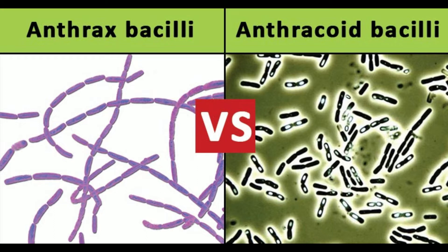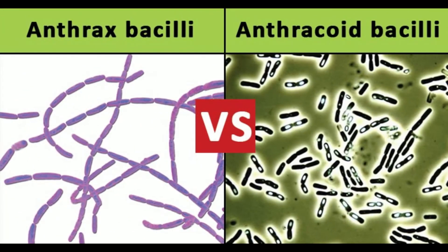Character 5: Motility - non-motile (anthrax) vs. motile (anthrachoid). Character 6: Under lower-power microscope - medusa head colony seen (anthrax) vs. not seen (anthrachoid). Character 7: Oxygen requirement - strict aerobic (anthrax) vs. aerobic or facultative anaerobic (anthrachoid). Character 8: Growth at 45°C - no growth (anthrax) vs. growth usually present (anthrachoid).